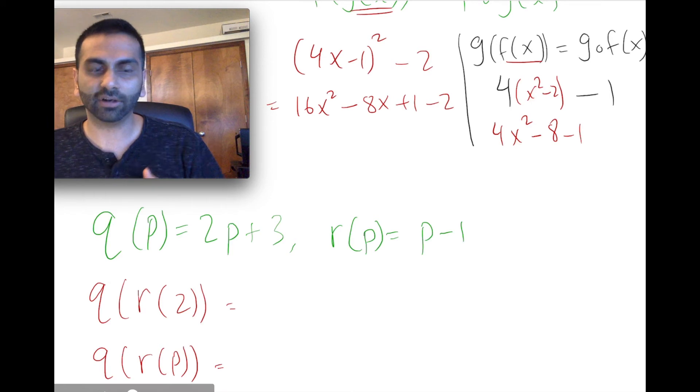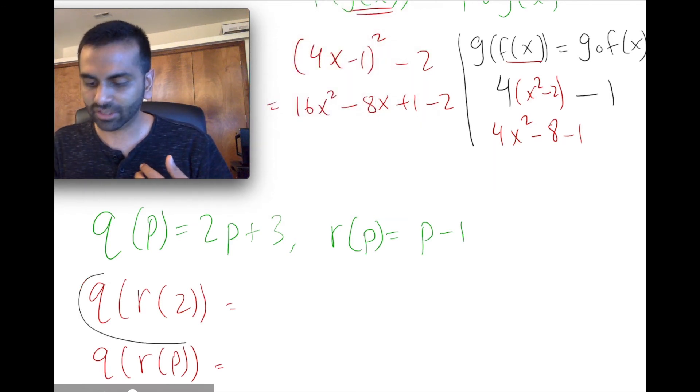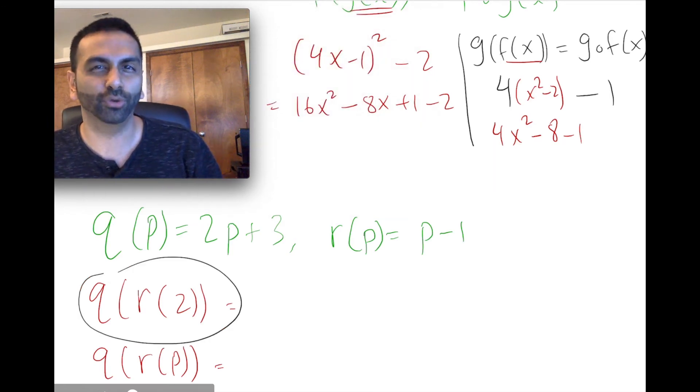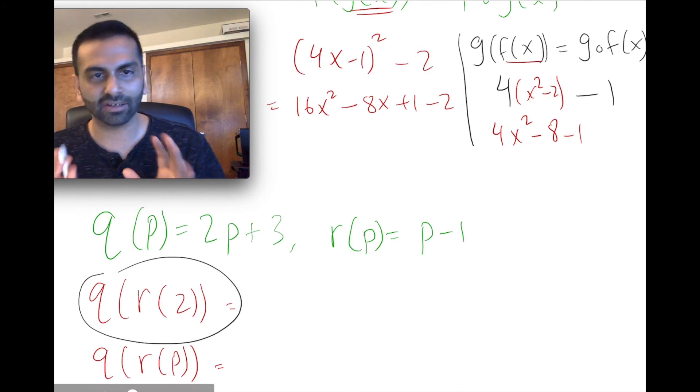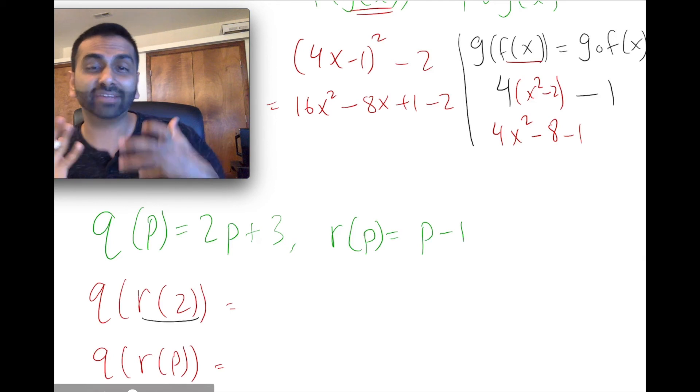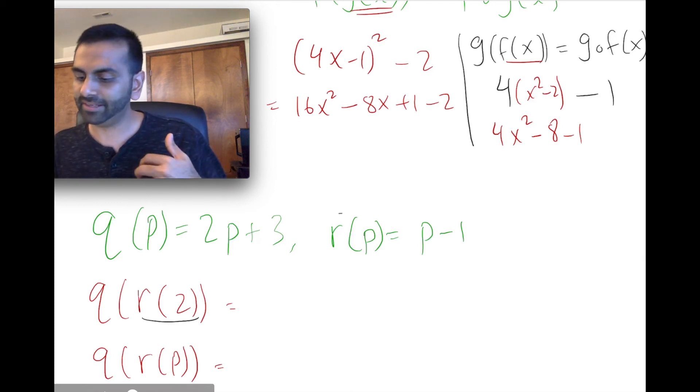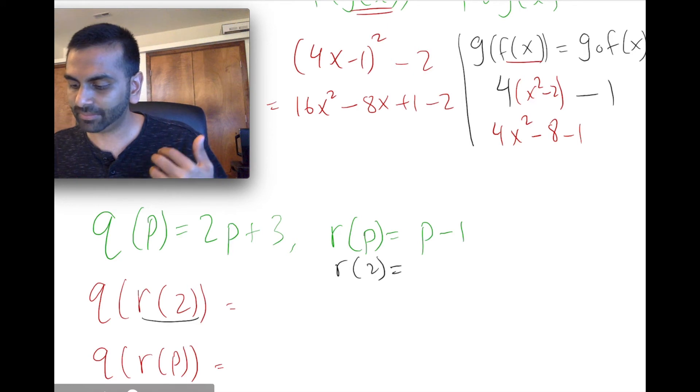And let's say you're asked, what is q of r of 2? Well, let's think about that, starting again from the inside. On the inside, you have r of 2. r of 2 is a number. If r of p is this guy, r of 2 is just going to be p replaced with 2: 2 minus 1, which is just 1.